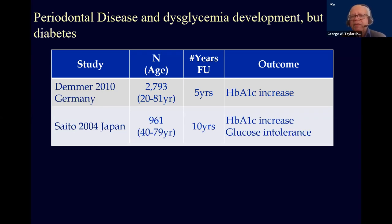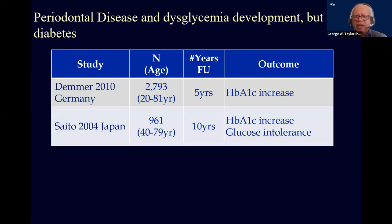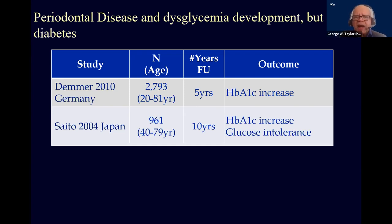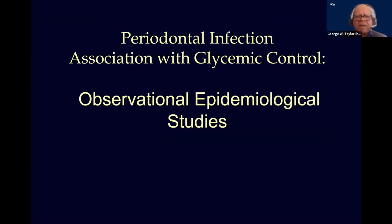Moving to periodontal disease and dysglycemia development, there have been cohort studies following people for five or ten years. The results showed that hemoglobin A1c — the measure of glycemic control — was greater after five years in those people who had experienced periodontal disease.